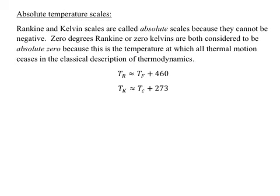The absolute temperature scales include Rankine and Kelvin, mainly the one that's used is Kelvin. They're called absolute scales because they cannot be negative. Zero degrees Rankine or zero Kelvins, notice that it's not degrees Kelvin by the way, zero Kelvin is lowercase when talking about the units, are both considered to be absolute zero because at this temperature all thermal motion ceases to exist. The molecules are not moving at all. We notice that the Rankine scale, when it starts at zero, the Fahrenheit scale is negative 460. When the Kelvin scale is at zero, the Celsius scale is at negative 273. So they're just scales that are shifted down, like a vertical shift.